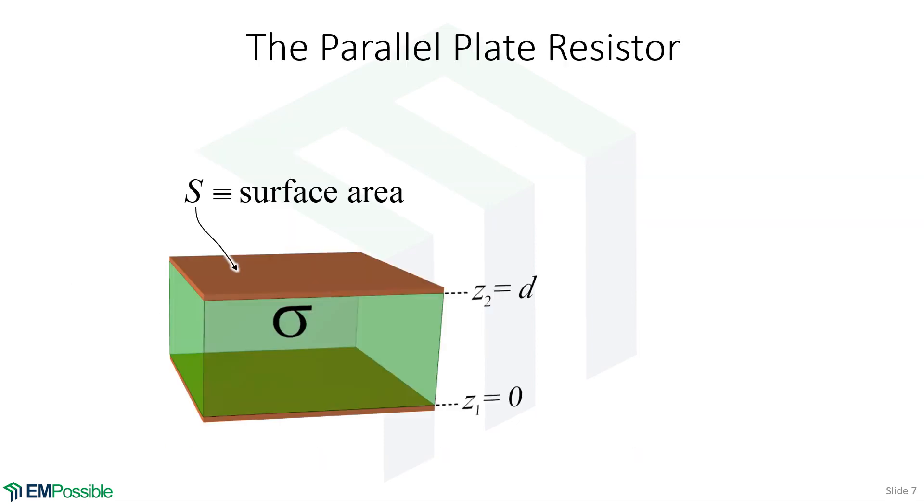We'll end this with the simplest of resistors, the parallel plate resistor, two metal plates on the either side of some partially conductive medium that we've labeled with this sigma.